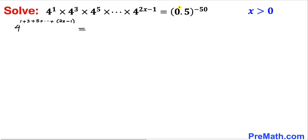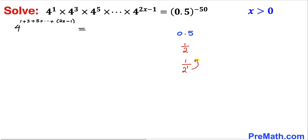Now let's focus on the right hand side. The base is 0.5, which we can write as a fraction: 1 divided by 2. And 2 can be written as 2 power 1, so 1 divided by 2 power 1. Moving the 2 to the top gives us 2 power negative 1. Therefore we replace 0.5 with 2 power negative 1, making the right hand side 2 power negative 1, whole power negative 50.